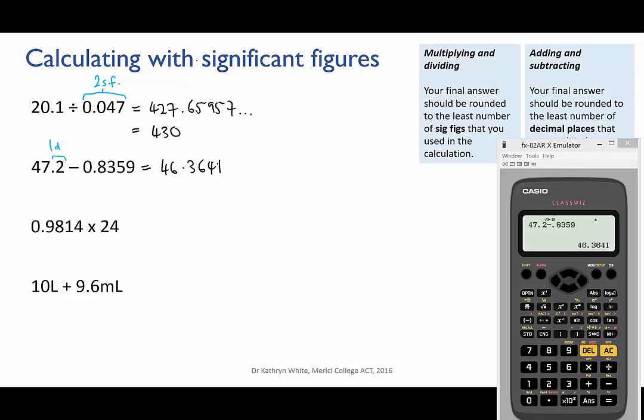So the first number has one decimal place and the second has four. Hence our final answer must be rounded to one decimal place. And that gives us 46.4.